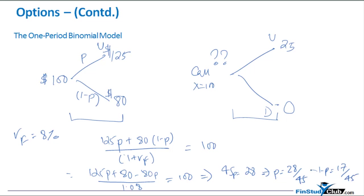These probabilities are not natural probabilities — they are not the real-world probabilities of the stock going up to $125 or down to $80. The probabilities we arrived at are known as risk-neutral probabilities, and they can differ from natural probabilities. These risk-neutral probabilities are very effective for finding the valuation of the call. We take p = 28/45 as the probability of the up state and 17/45 as the probability of the down state, and now we value the call.